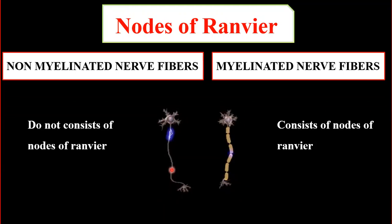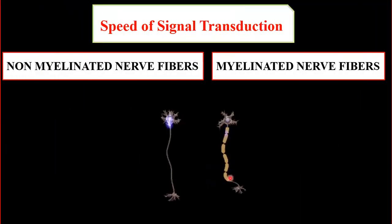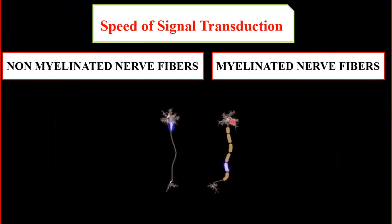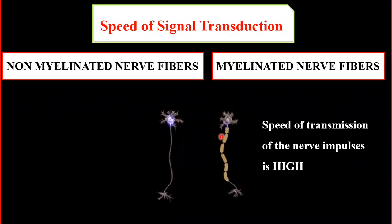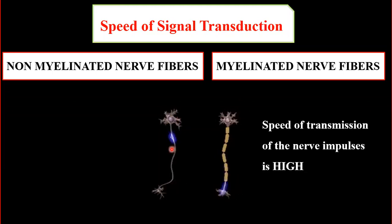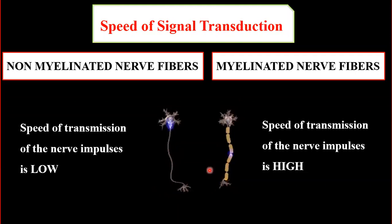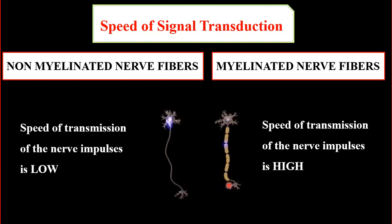The functions of the myelin sheath and nodes of Ranvier relate to nerve impulse conduction and transmission. In terms of speed, signal transmission is faster in myelinated nerve fibers. This is because myelinated fibers are surrounded by myelin sheets and have the gaps — nodes of Ranvier — present between them.